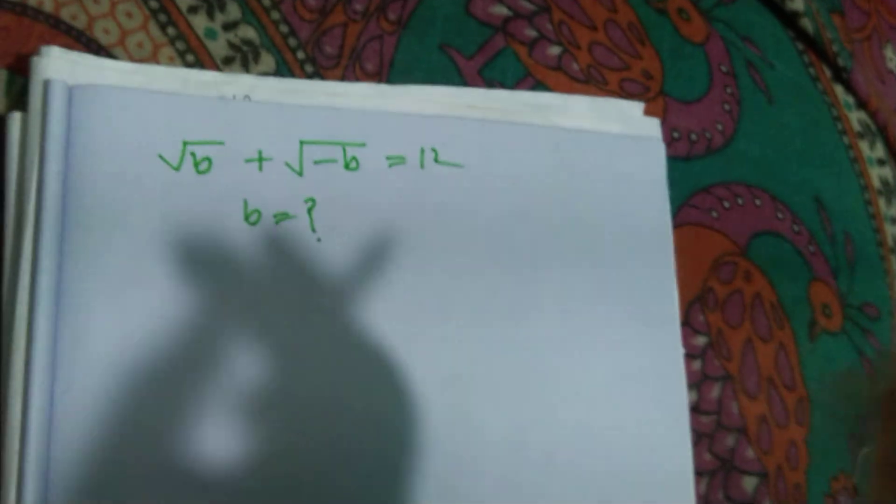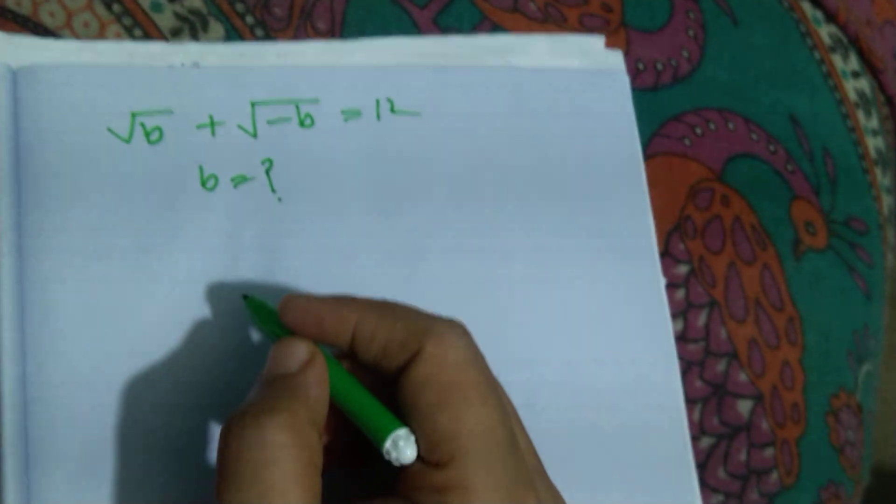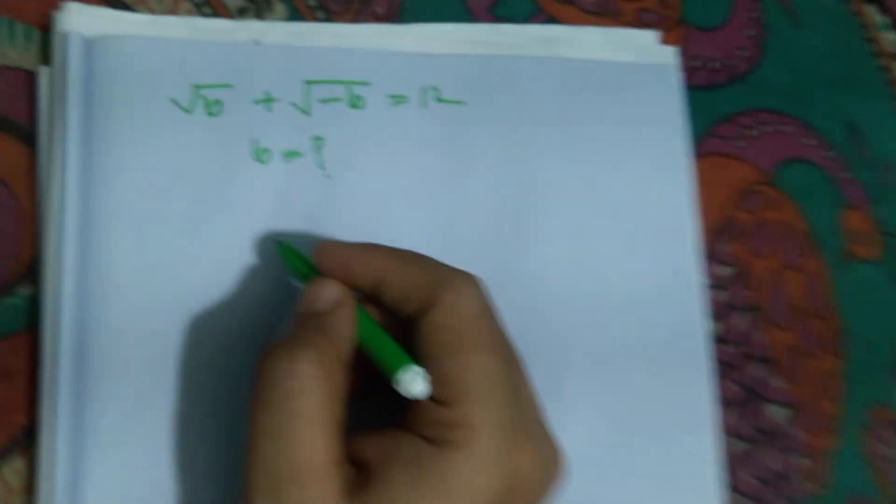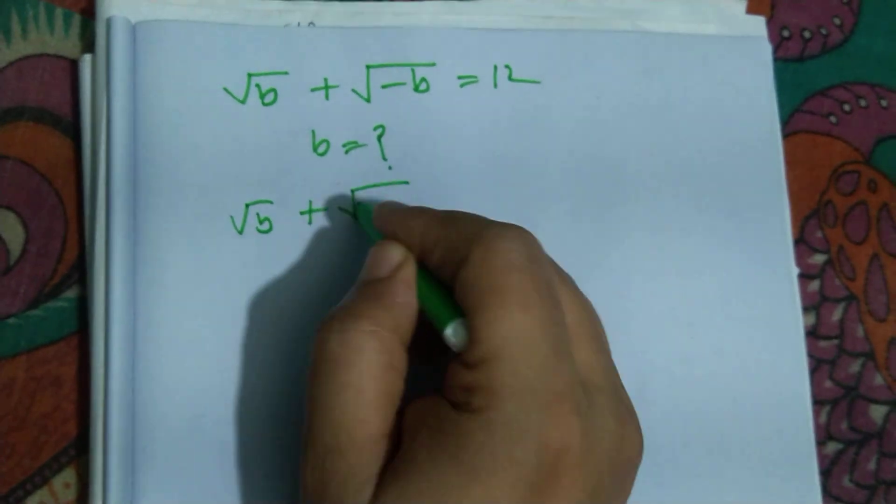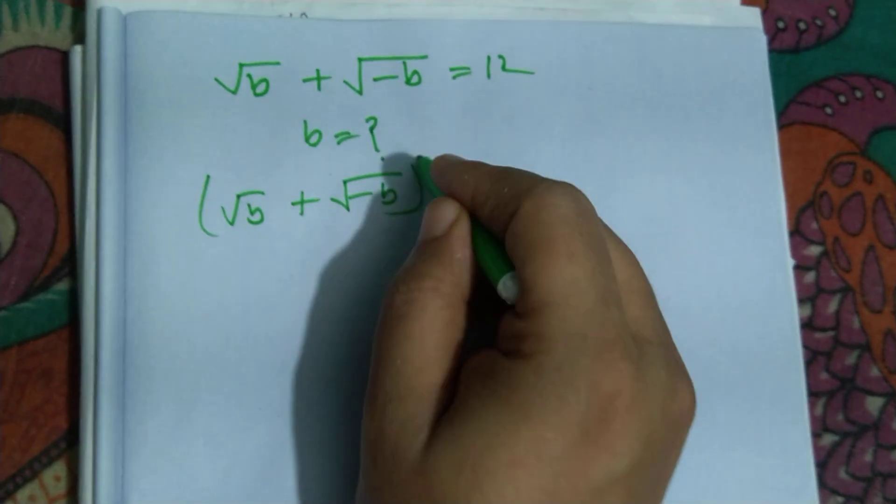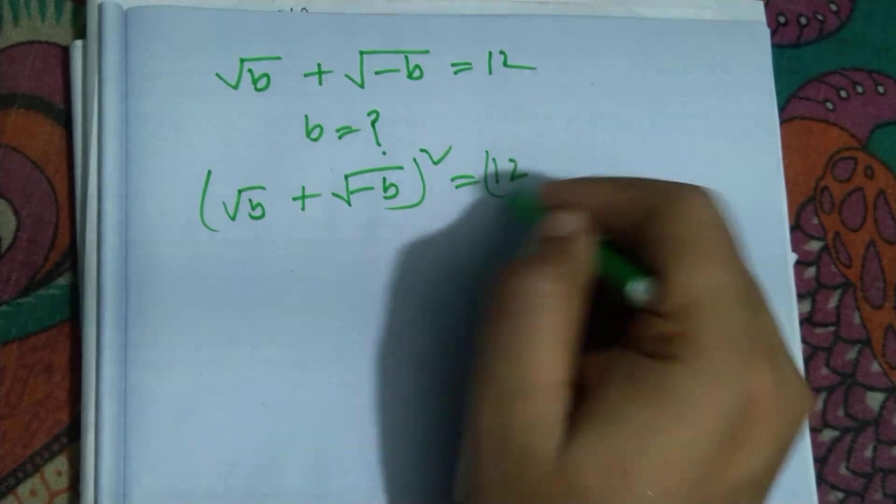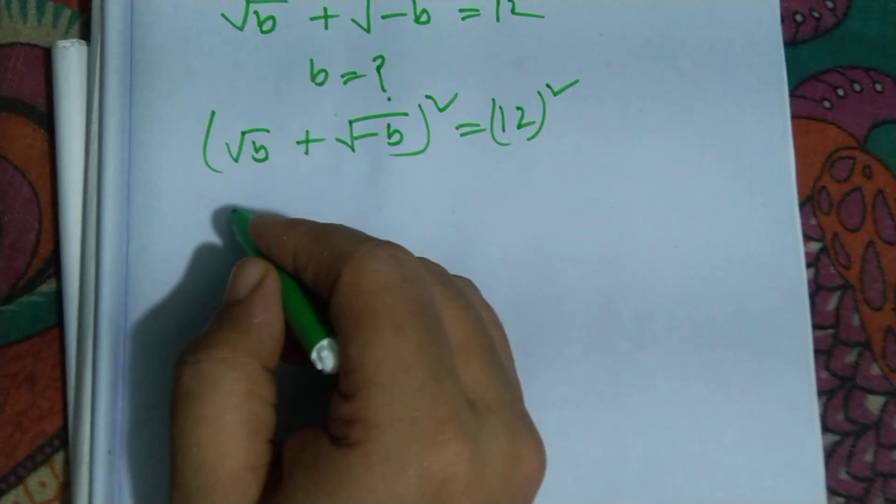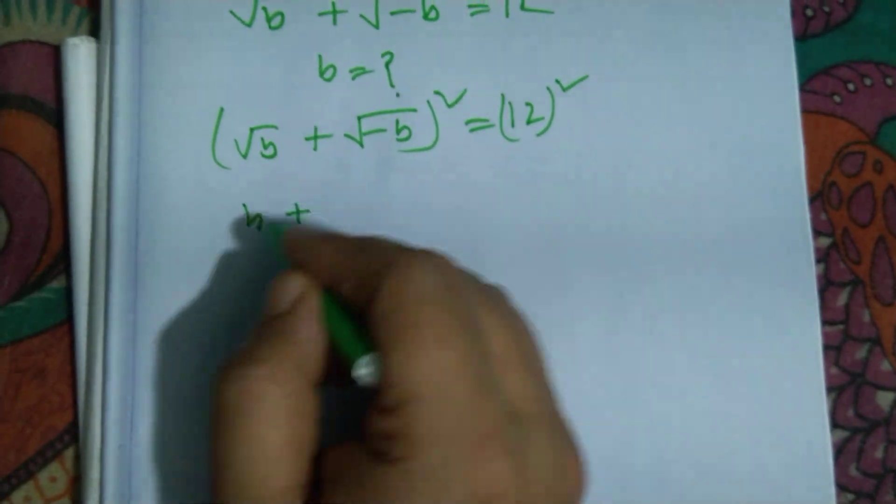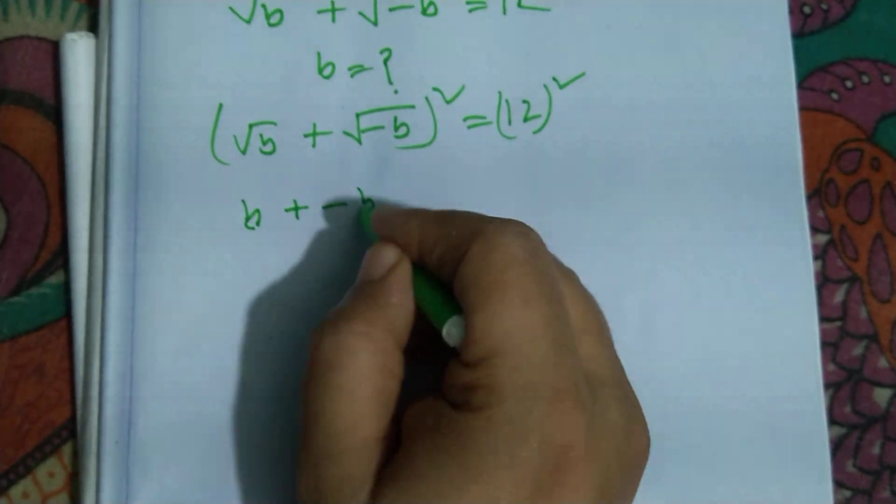Hello dear friends, welcome to my channel. Today's discussion is Olympiad mathematics: root B plus root over minus B whole square is equal to 12 squared. Okay, so I can write this equation as B plus minus B.